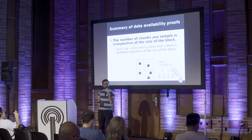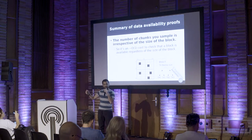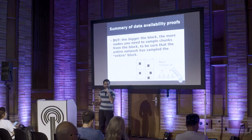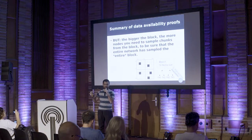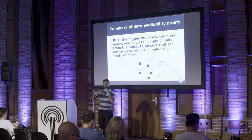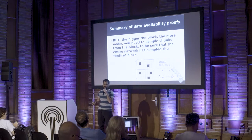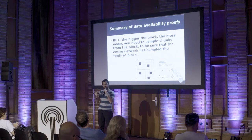The number of chunks that you have to sample is irrespective of the size of the block. So even if you increase the block size, you still need to sample the same number of chunks to get roughly the same data availability guarantee. The caveat is that the bigger the block, the more nodes you need in the network. This scheme only works if there are enough nodes in the network to collectively sample enough chunks in the block such that they can collectively reconstruct the entire block. Think of it as a peer-to-peer file sharing network like BitTorrent, where multiple peers have different parts of the file and share them until they have the whole file.